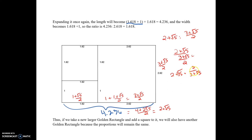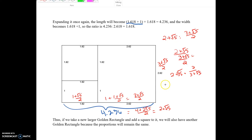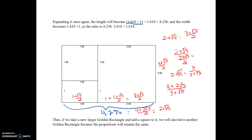Multiplying through on the top, we have 4 + 2√5 + 2√5, which simplifies to 4 + 4√5. After multiplying the 2 through on the top, the bottom remains 3 + √5.